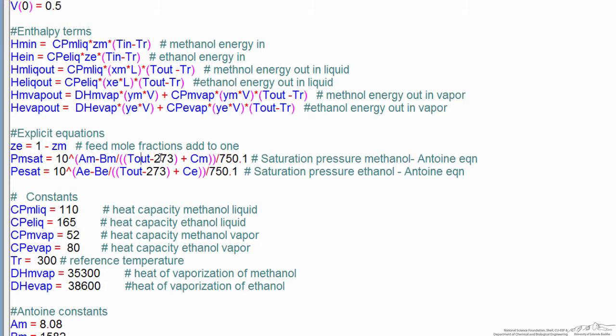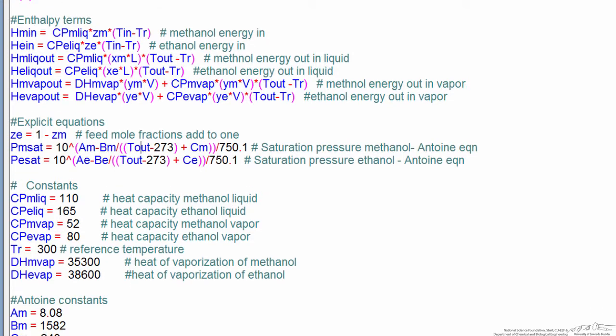But that's a typical way Antoine equations are given. And then we have a number of constants for the heat capacities and heat of vaporization.